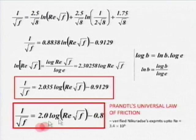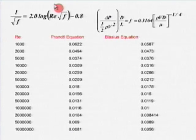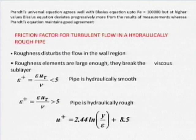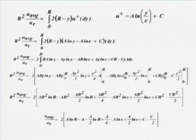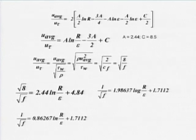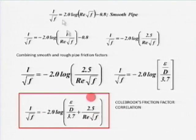For rough surfaces, taking the turbulent boundary layer only and substituting r/ε instead of y⁺ in the universal profile gives: 1/√F = 2 log(ε/d × 3.7 Re√F), which is the Colebrook correlation. For turbulent flow velocity profiles, the laminar case gives a parabola, while turbulent flow gives a flat hat profile described by the power law: u/u_avg = (y/R)^(1/n), where n is a function of Reynolds number.